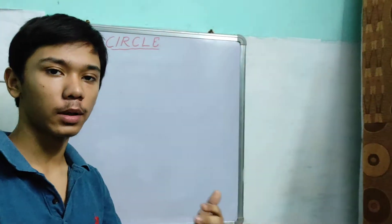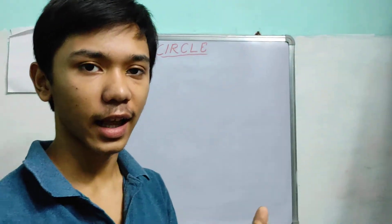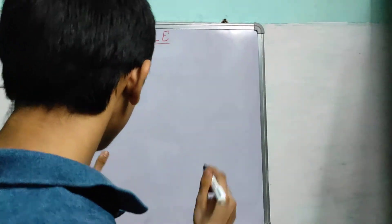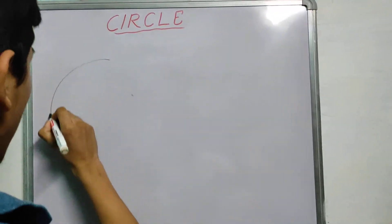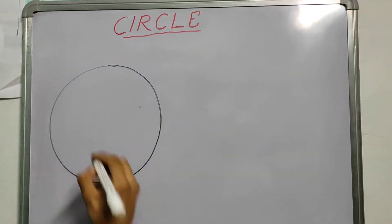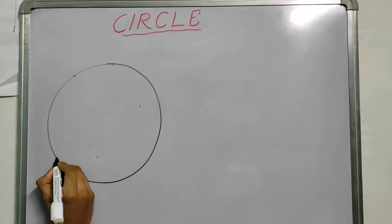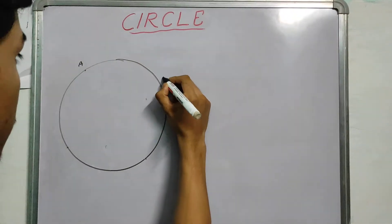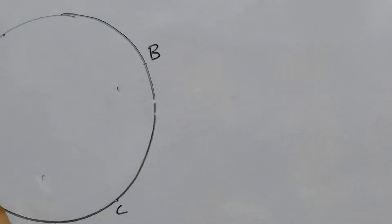So today we will be talking about chords and secants and two theorems related to these. I draw a circle and then I mark four points and call them A, B, C, D.